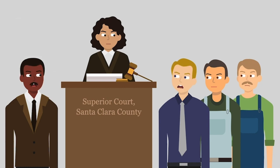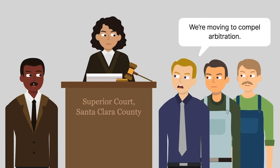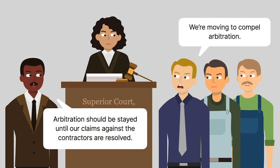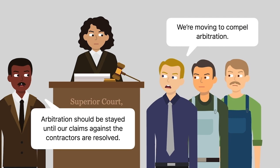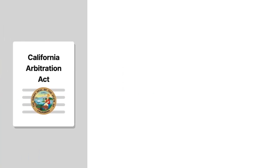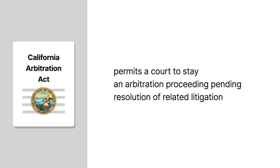Volt moved to compel arbitration, and Stanford moved to stay arbitration until its claims against the other contractors were resolved. To support its motion, Stanford cited a provision of the California Arbitration Act that permitted a court to stay an arbitration proceeding pending resolution of related litigation.